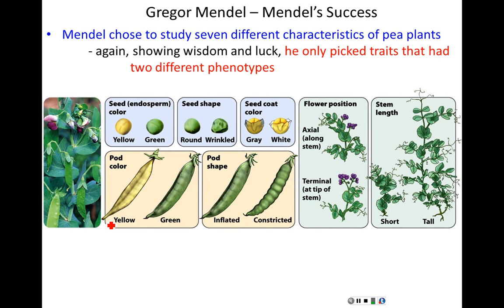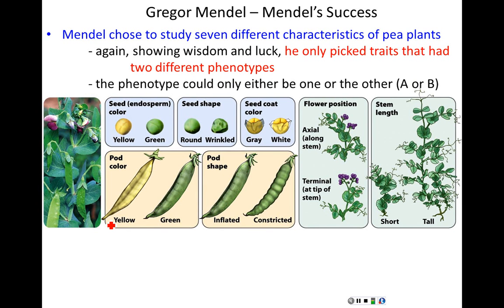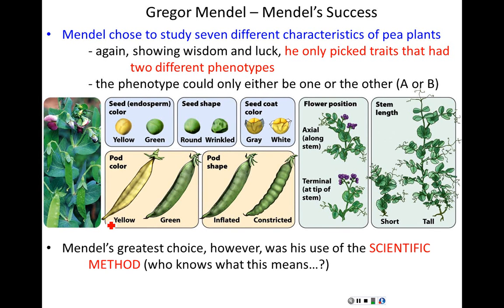Another of Mendel's extremely lucky and wise decisions is that he picked only traits that had two different phenotypes. There are no purple seeds, no moderate pod shapes, no flowers along the stem and at the tip simultaneously. These are two-phenotype traits: A or B, trait one or trait two, and that's it. The phenotype could only be one of two things. That was critically important — it got at the general mechanism of genetics, and more importantly it was easy to measure. All you had to do was look at the plant and see the trait. The seed was either yellow or it was green, period.